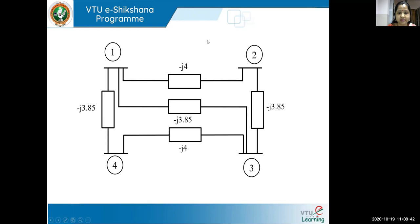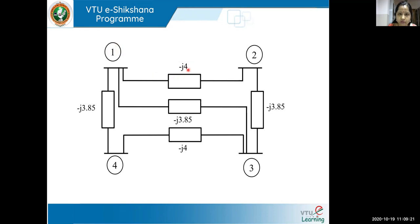Now, how do I apply the inspection method to this network to form a Y bus? As you remember, the diagonal elements are called self admittances or driving point admittances, and off-diagonal elements are called transfer admittances. The diagonal elements represent the summation of all line admittances connected to a particular bus. So if I want Y11 for bus one, Y11 will be y12 (which is minus j4) plus y13 (minus j3.85) plus y14 (minus j3.85).